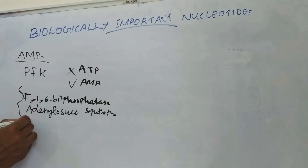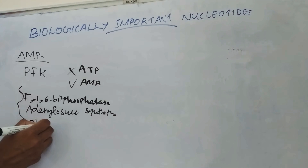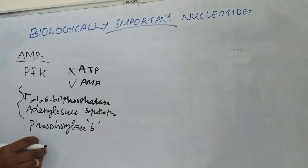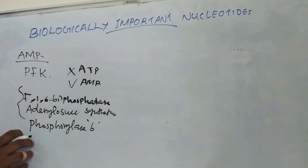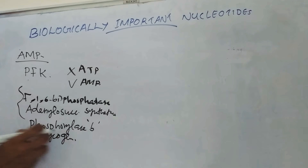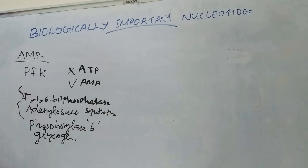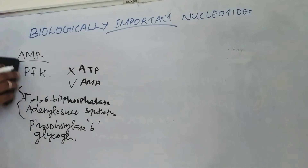AMP activates phosphorylase-B in muscle and increases the breakdown of glycogen. These are the functions of adenosine nucleotides — ATP, ADP, and AMP.